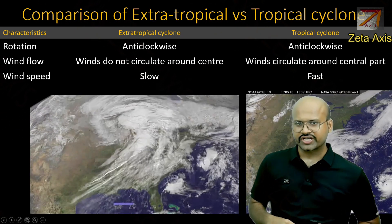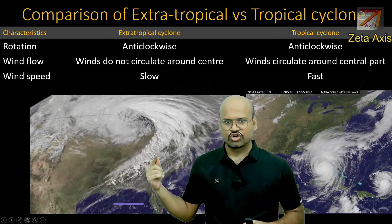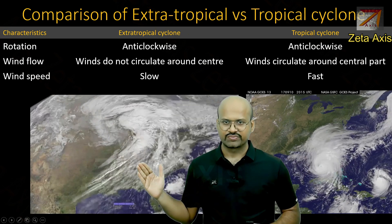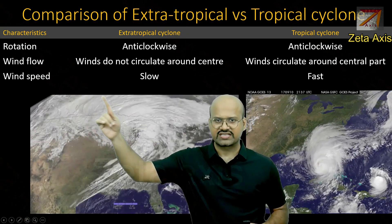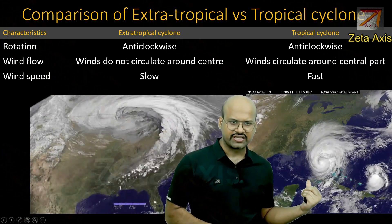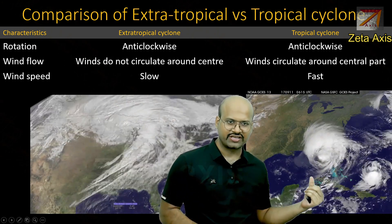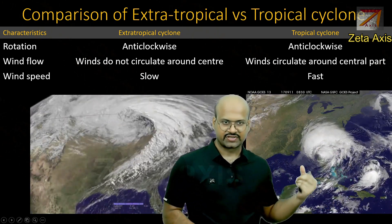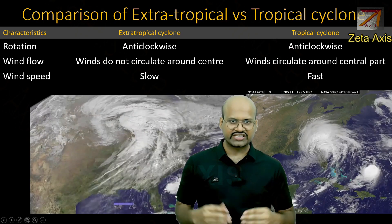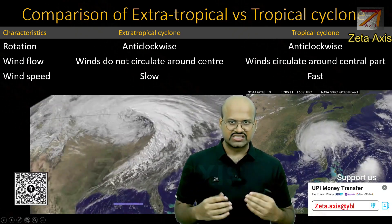Then we have rotation. We can see that the air rotates in an anti-clockwise direction in the extratropical cyclone. Similarly, in the tropical cyclone, the air also rotates in an anti-clockwise direction. This is true for the northern hemisphere — if you go to the southern hemisphere, the rotation direction will change.